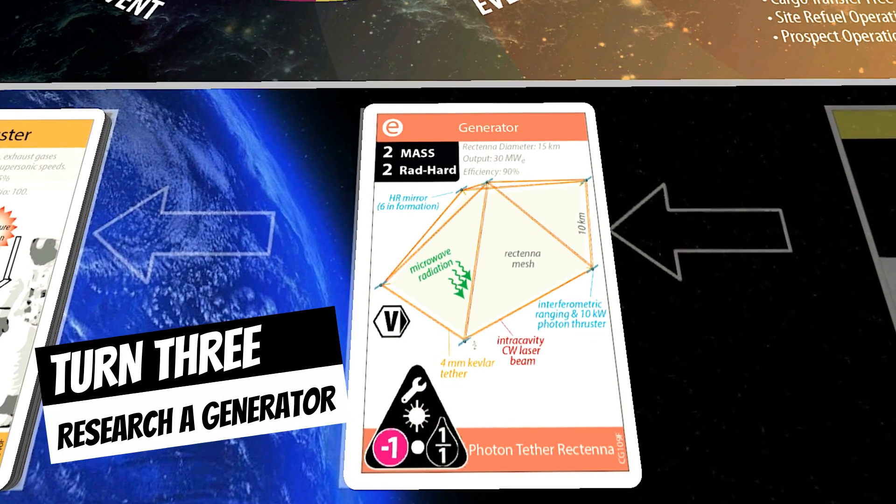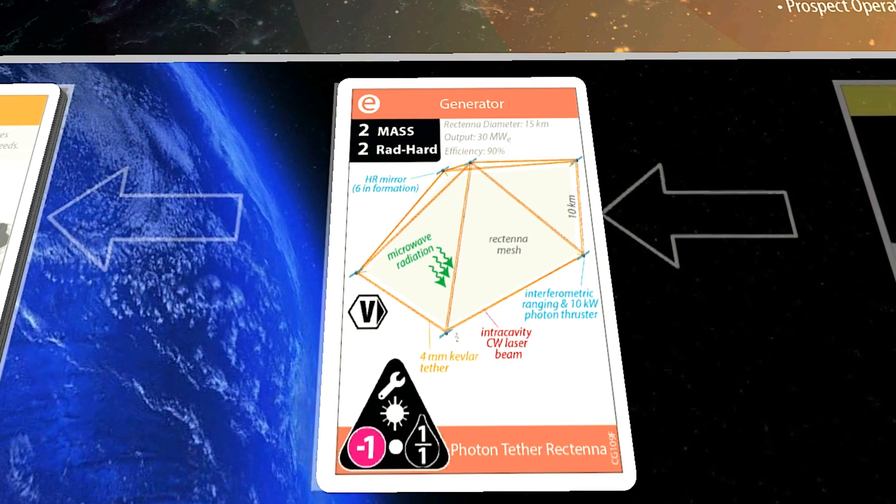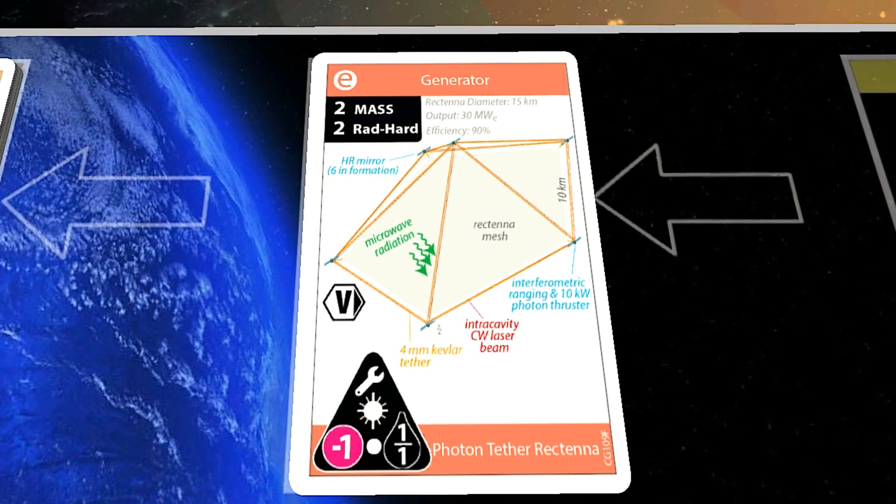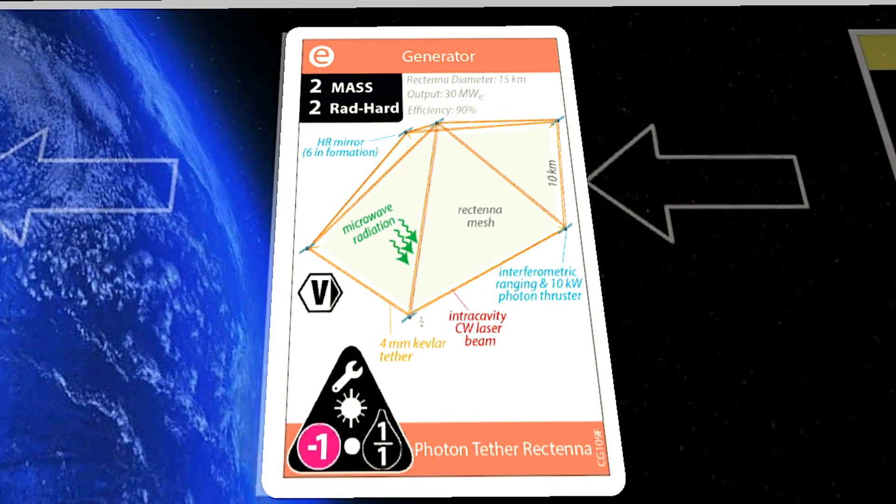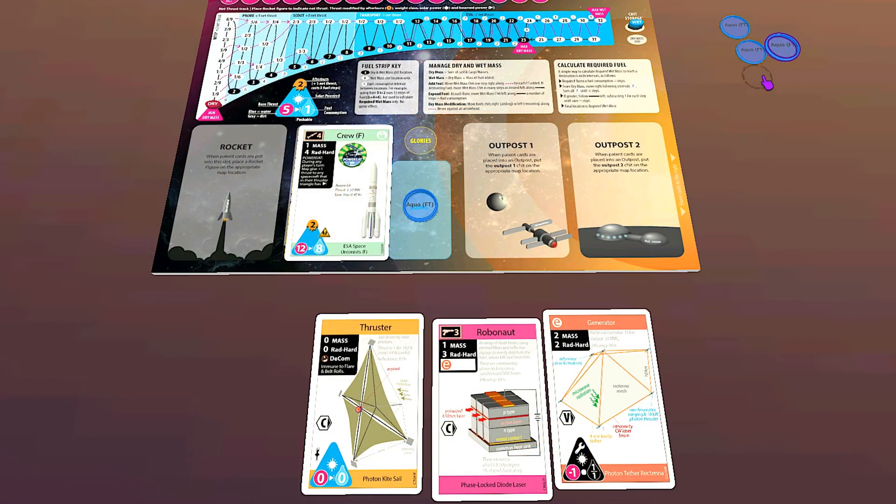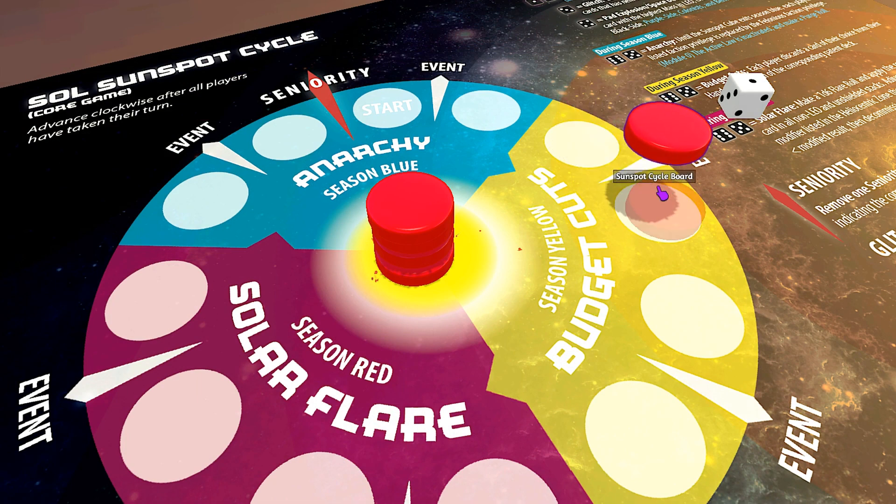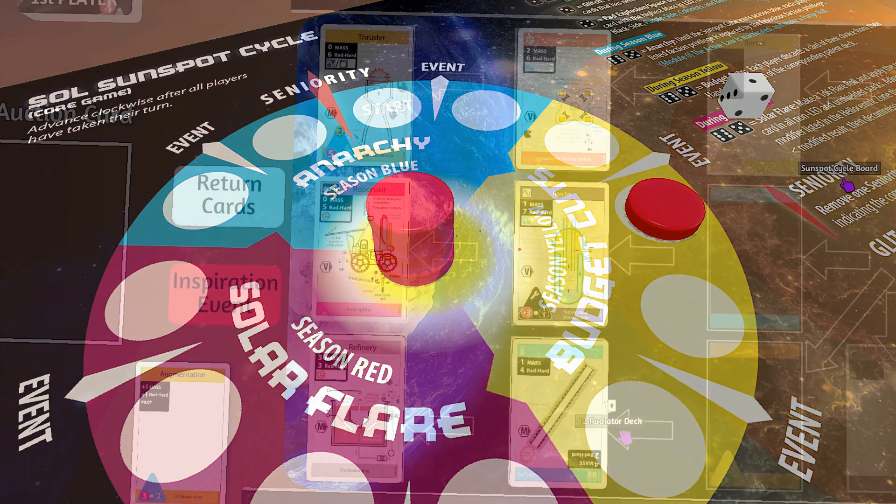After that I will take my generator for another aqua. The generator I get is the photon tether rectenna, which is not very tough against radiation but is light and self-sufficient, not requiring any other supports to function. The sunspot cycle passes the first event in the yellow season and I roll a one—inspiration. All the top cards go to the bottom of their respective decks. Whew! I grabbed what I needed just in time.